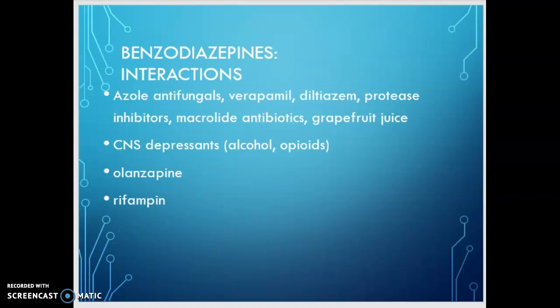Some interactions that occur with benzodiazepines: azole antifungals like ketoconazole and fluconazole are strong CYP3A4 or CYP2C9 inhibitors, and these medications can cause a decrease in the metabolism of the benzodiazepine. The same is true of verapamil, diltiazem, protease inhibitors, macrolide antibiotics, and grapefruit juice. CNS depressants like alcohol and opioids will have an additive effect, causing potentiation. Olanzapine is going to increase the effects as well, whereas rifampin is going to decrease the effect of the benzodiazepine because it will increase the metabolism.